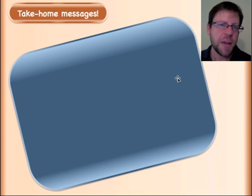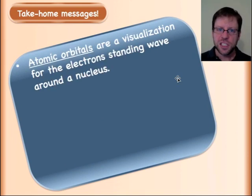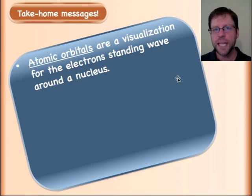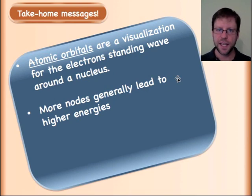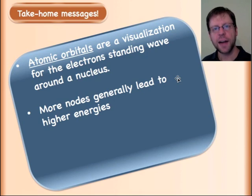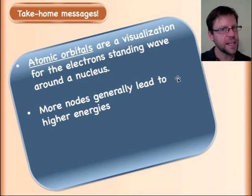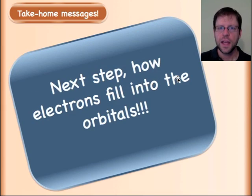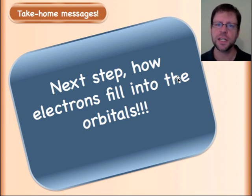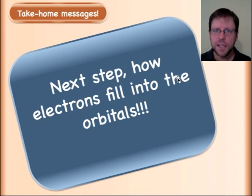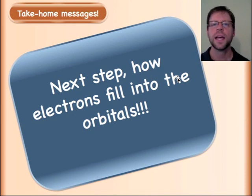Now I'm sure that was a lot of information, so let's look at the take-home messages. Atomic orbitals are visualizations for how the electron actually behaves around a nucleus — we are looking at the probability of finding an electron on the standing wave. More nodes generally means higher energies. The very next step would be to take this information and connect it to the periodic table — the s block, p block, d block, and f block all come from this, and it drives their reactivity.